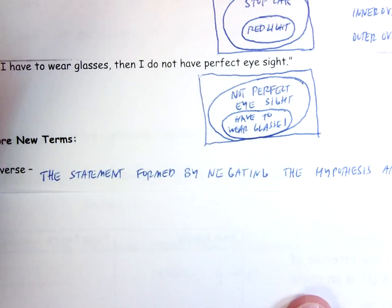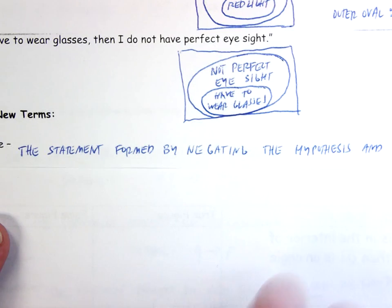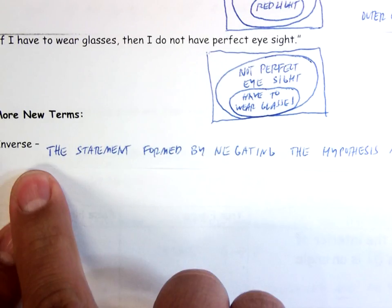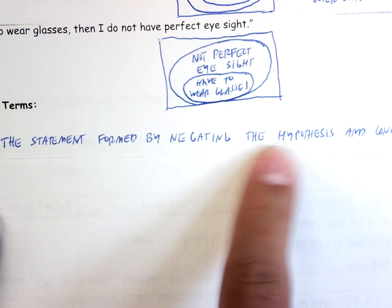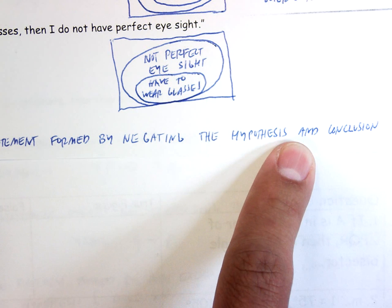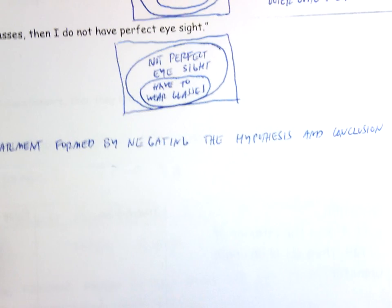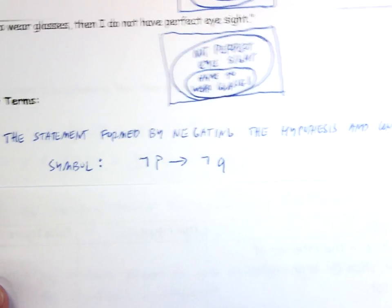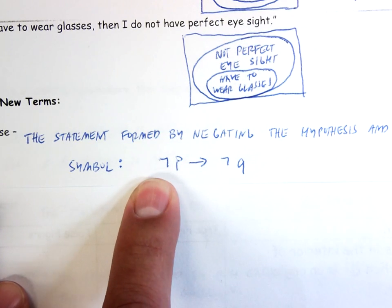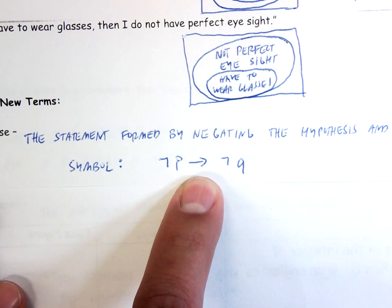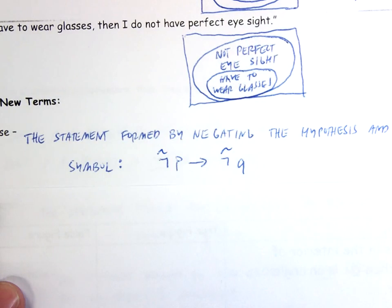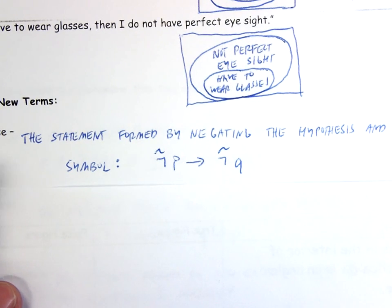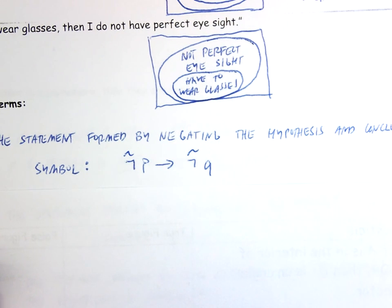The inverse is the statement formed by negating both the hypothesis and the conclusion. The conditional says 'if P, then Q.' The inverse says 'if not P, then not Q.' We negate both the hypothesis and the conclusion — that's what we call the inverse.